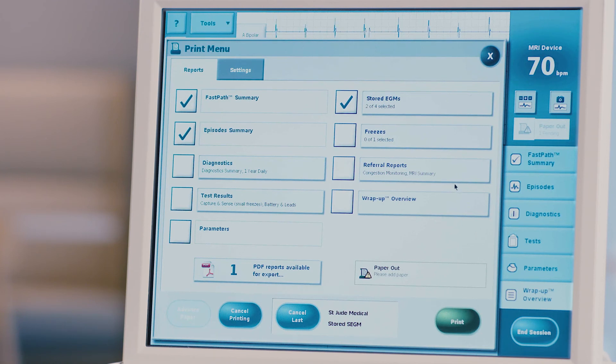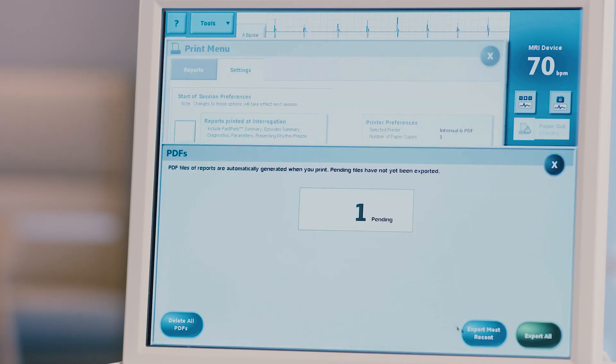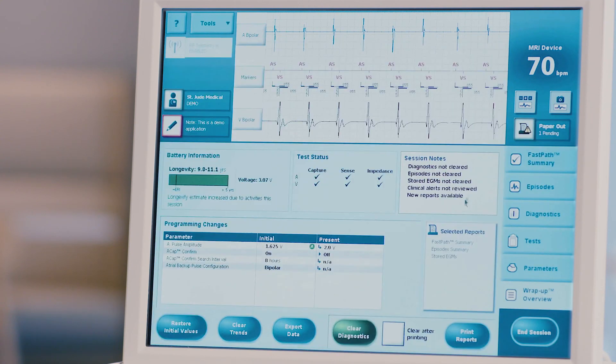You can change the printing output, internal printer, external printer, or PDF report, in the settings tab at the top of the screen. If you need to save a PDF of the reports, click PDF reports available and choose export most recent. Press X to return to the wrap-up overview screen.